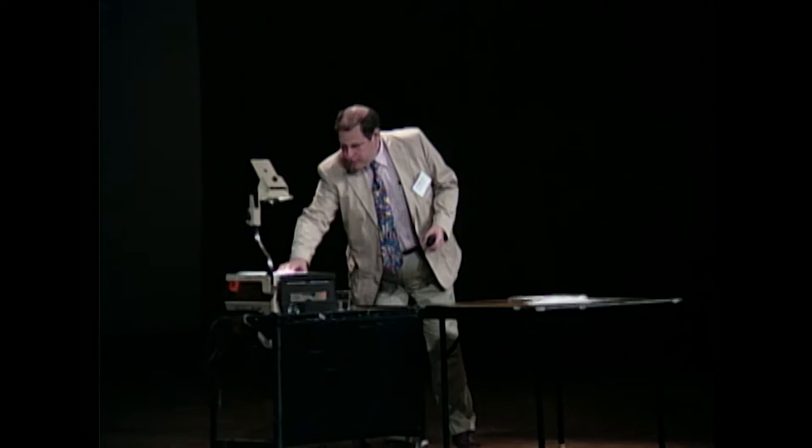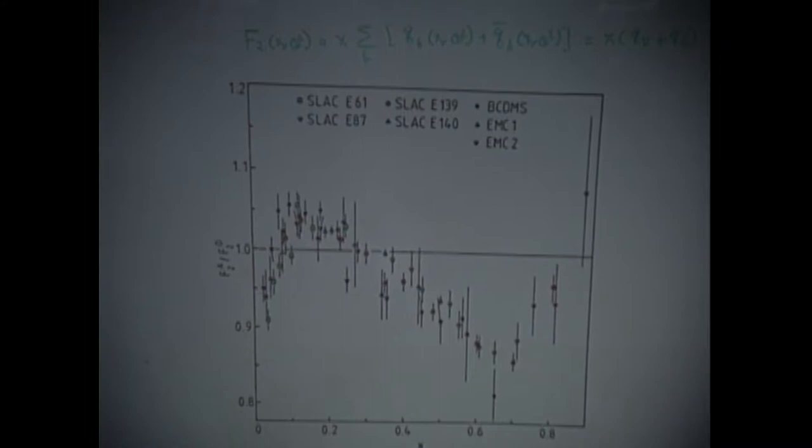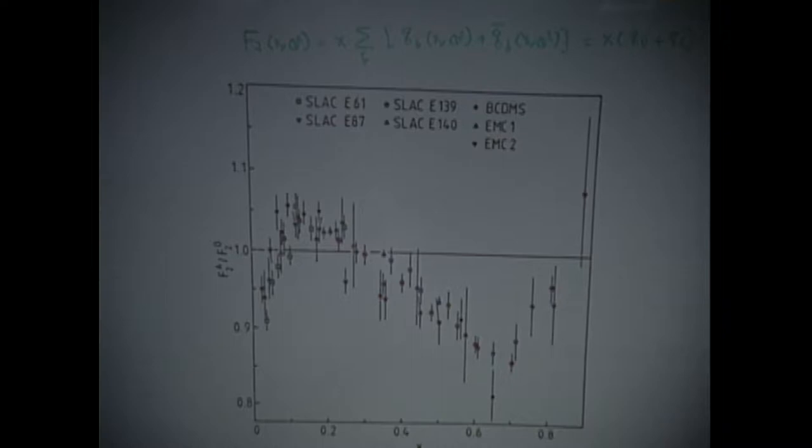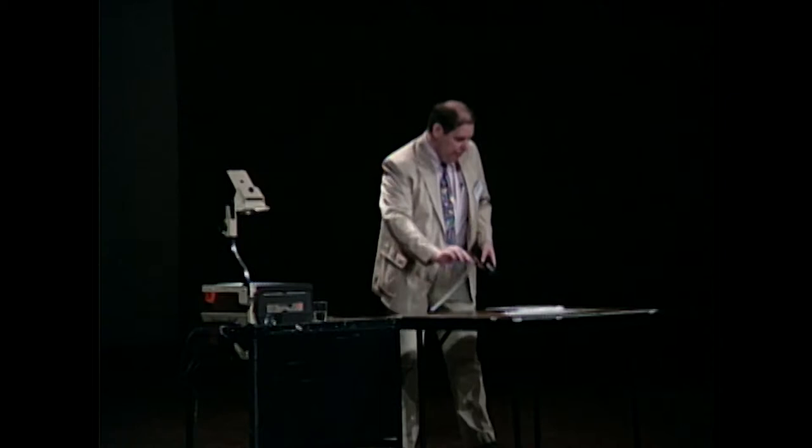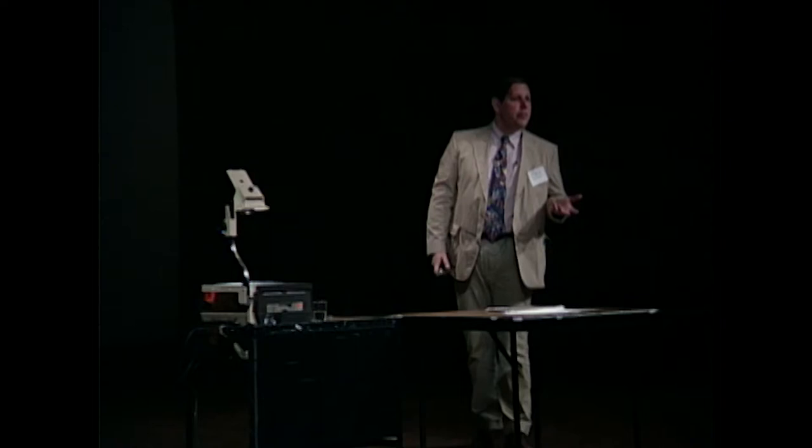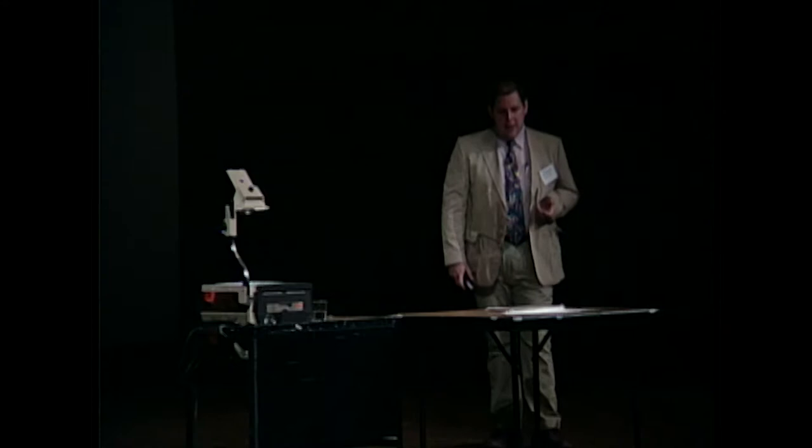Let me quickly remind you of the first EMC effect, the ratio of the response function in a heavy system to deuterium. One sees throughout this intermediate X region, where X is the longitudinal momentum carried by the struck quark, this degradation. The structure functions are the quark momentum distributions. This degradation at intermediate X says there are fewer quarks with those higher momentum values, meaning longer range correlations. The quarks have longer correlation lengths inside the nucleus, which is many-body modification of structure of the nucleon in the nucleus.